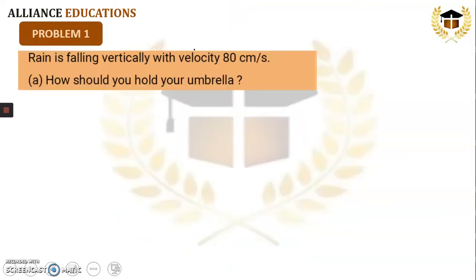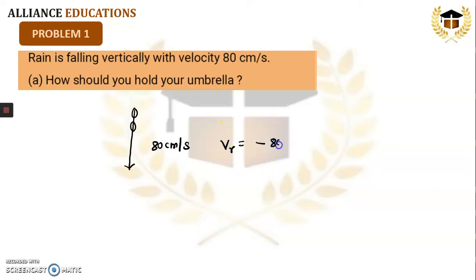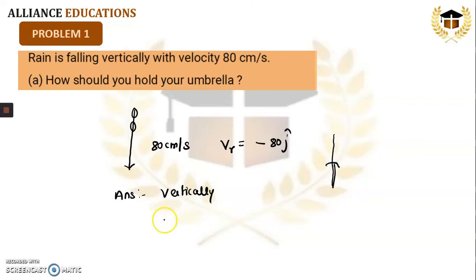Let us understand a question. Rain is falling vertically with velocity 80 cm per second, so velocity of rain is minus 80j. How should you hold your umbrella? Since no information is given that the person is walking — the person is standing — the answer should be vertically. The umbrella is held vertically, meaning the angle it makes with the vertical is 0 degrees.